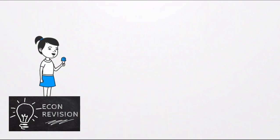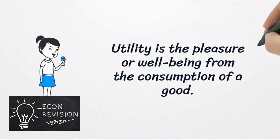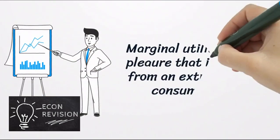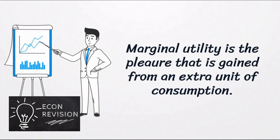You see, utility is the pleasure or the satisfaction from the consumption of a good. On the other hand, marginal utility is the pleasure that is gained from an extra unit of consumption.